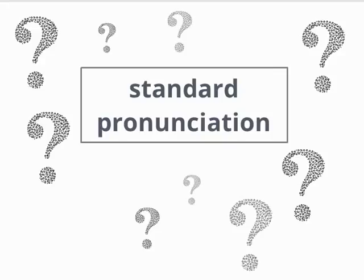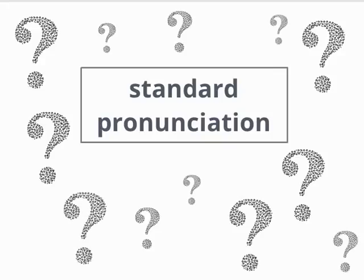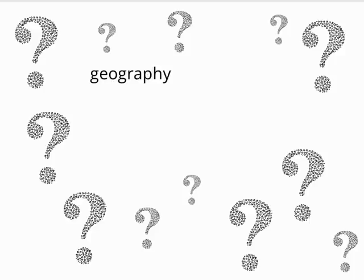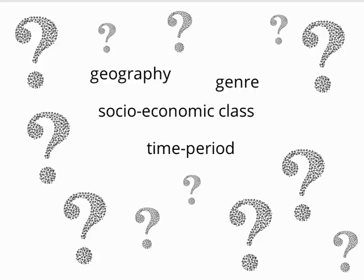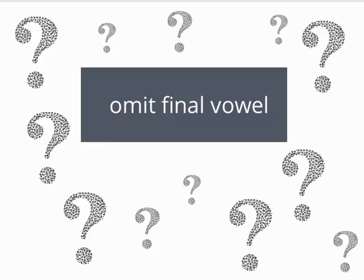There is, however, no consensus on the standard pronunciation in classical Latin. Did the final vowel disappear completely, or was it slightly slurred into the next vowel? It is unlikely that we will ever know, and it is possible that pronunciation was different based on geography, socioeconomic class, genre, and time period. Still, we can adhere to a simple omission of the final vowel for convenience.